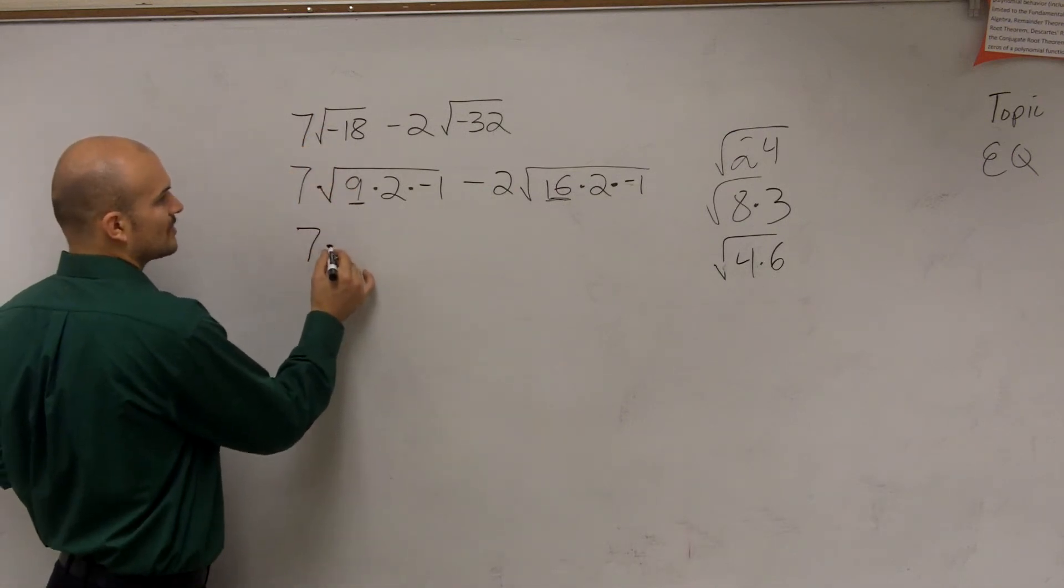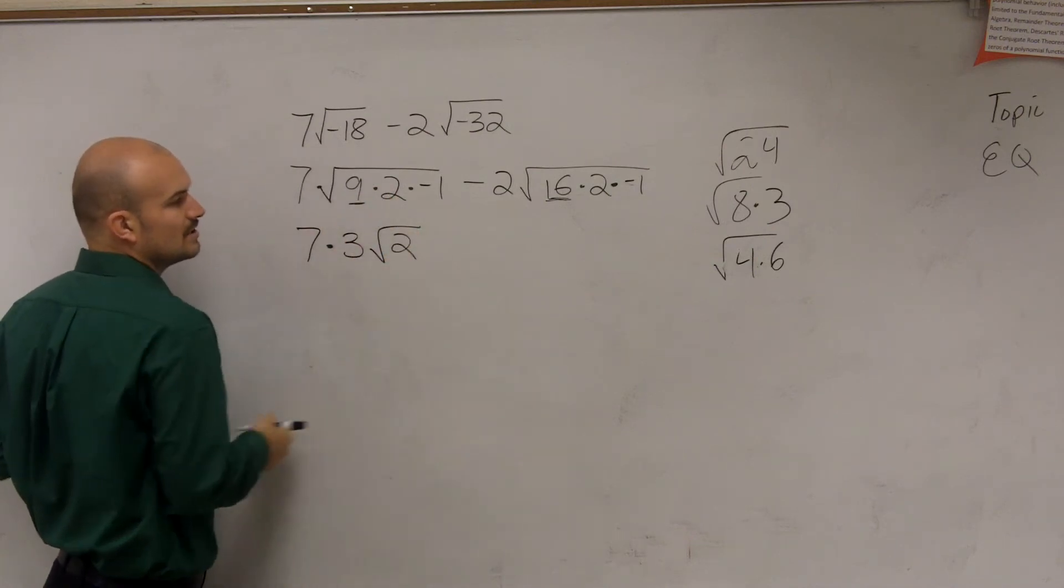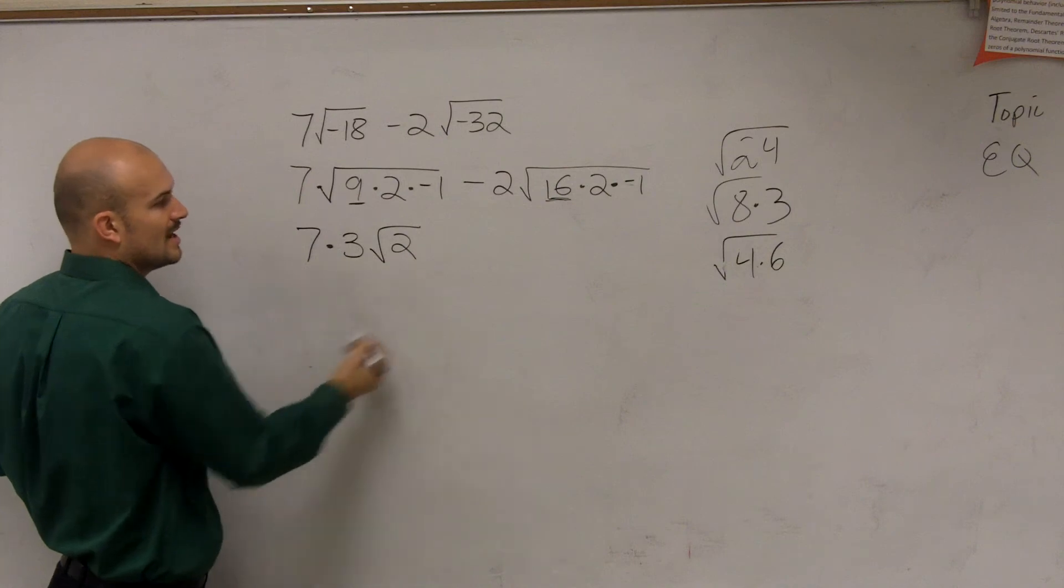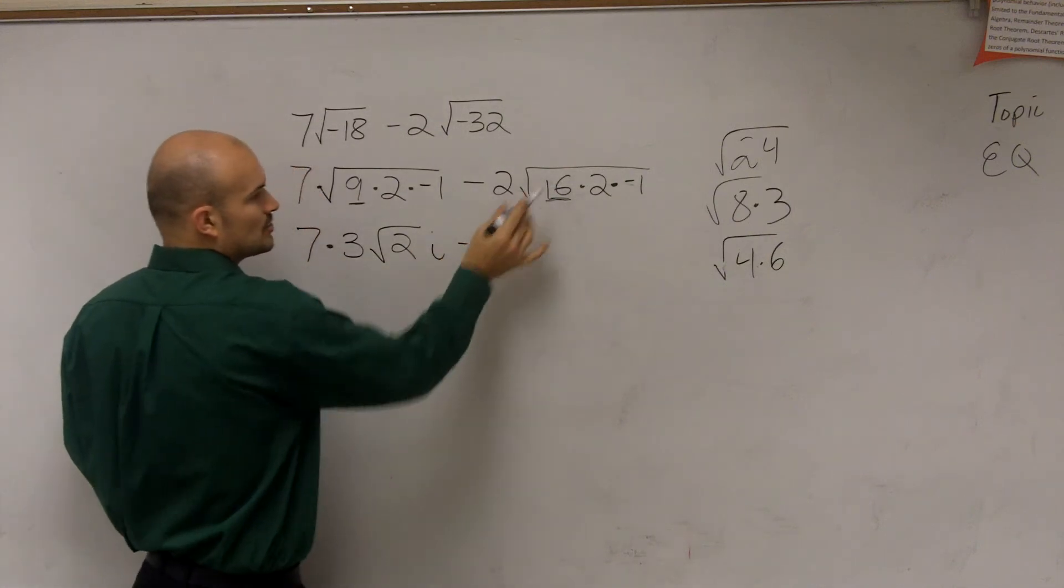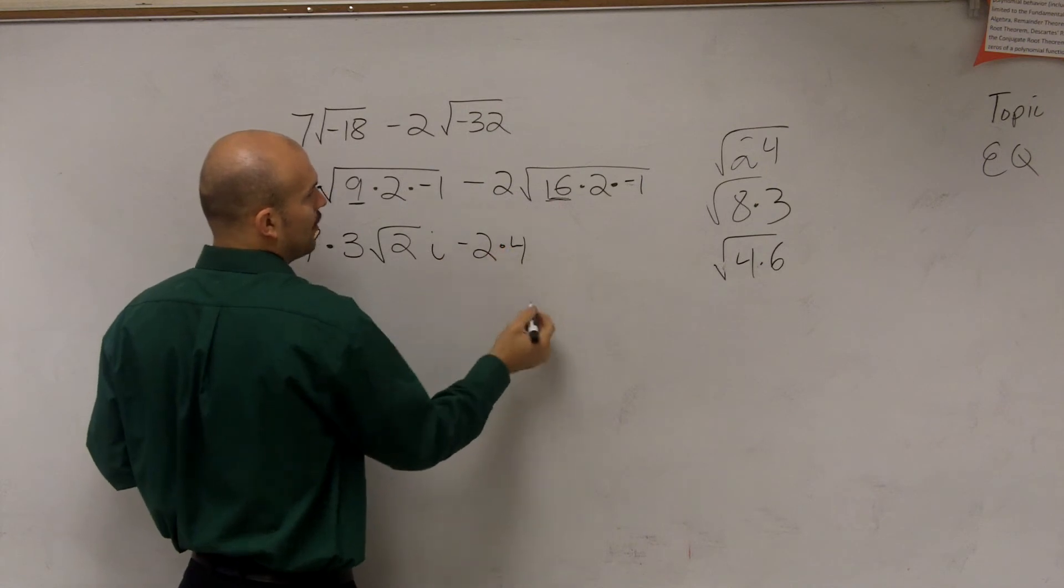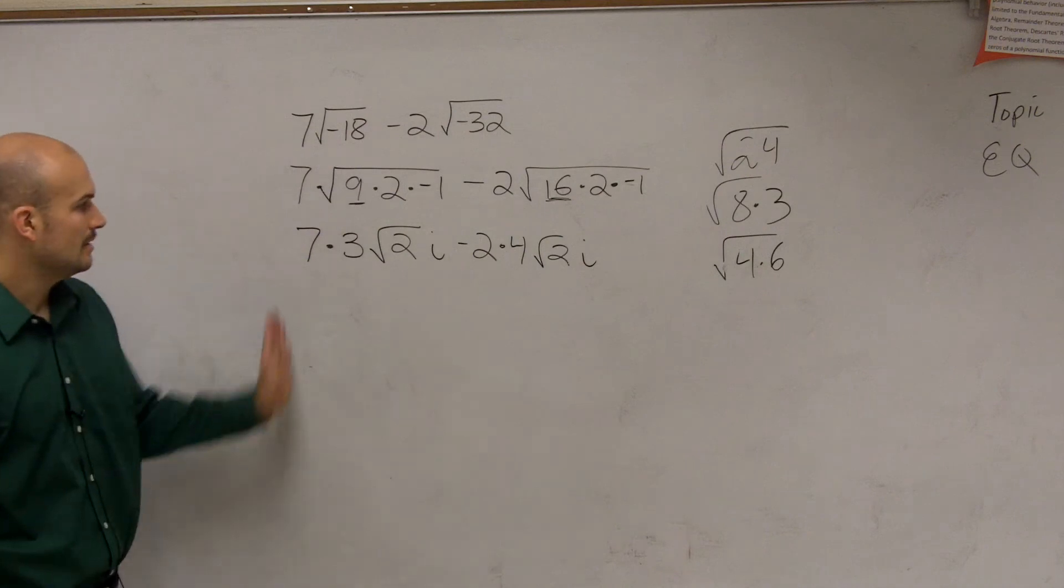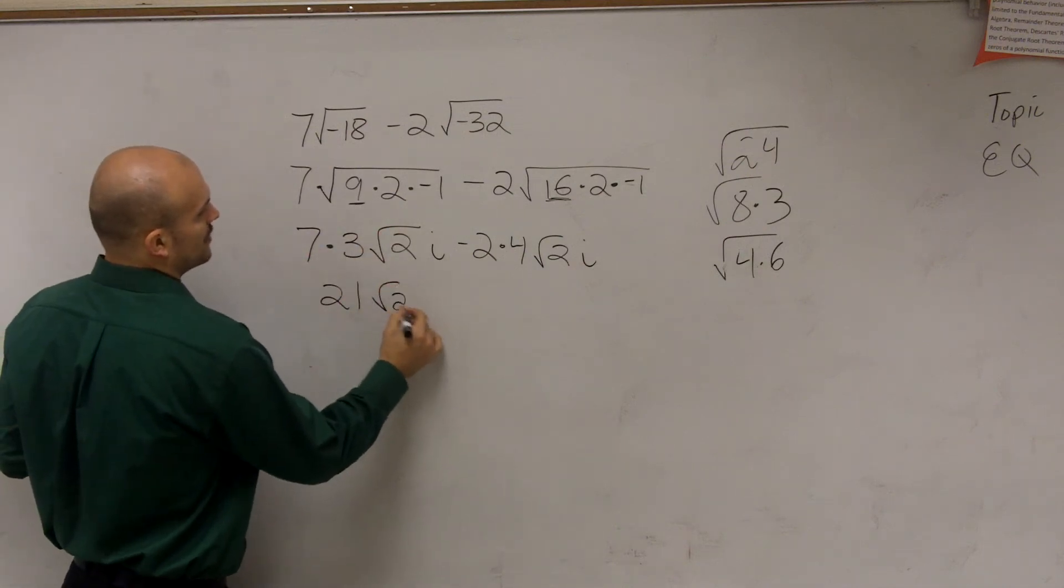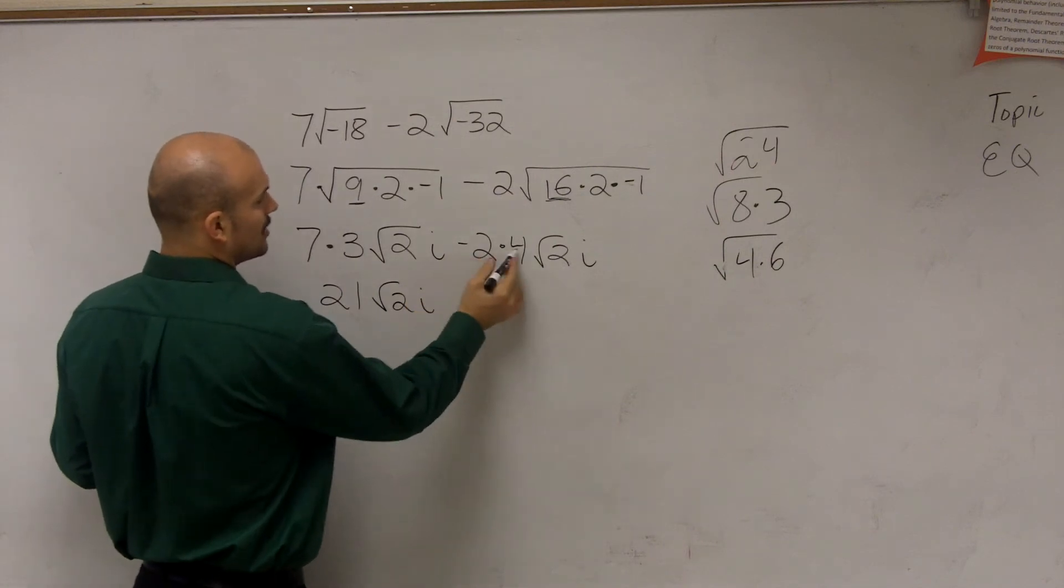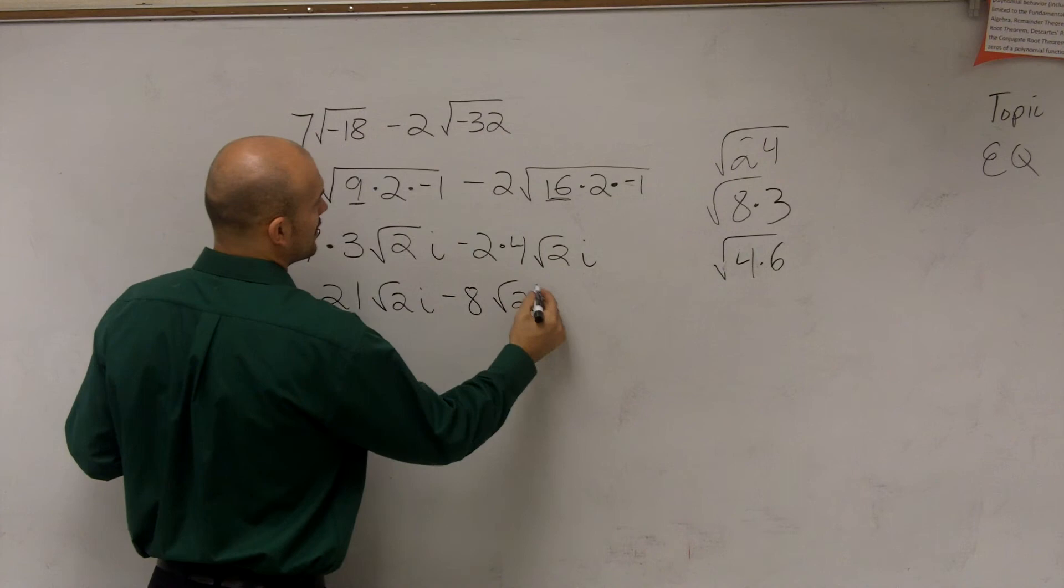So now to simplify this, the square root of 9 is 3. I do not know the square root of 2, so that's going to leave on a radical. And the square root of negative 1 is i minus 2. The square root of 16 is 4. I don't know the square root of 2. The square root of negative 1 is i. Now multiply my coefficients. So I have 21 square root of 2i minus 8 square root of 2i.